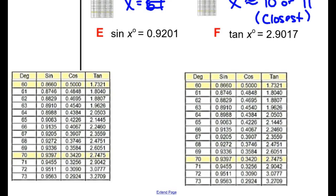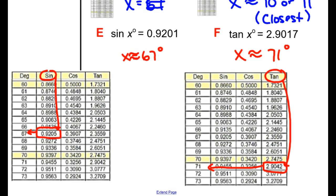Now for the last two, I want you to take your table. I want you to try to find those angle measures. Pause your video, find the angle measures, get your answers, and then we'll come back. All right, so I came back. I discovered that in the sine column, we went down, we got close to 67 degrees. And in the tan column for letter F, we came down and we got closest to 71 degrees. Those are your functions.